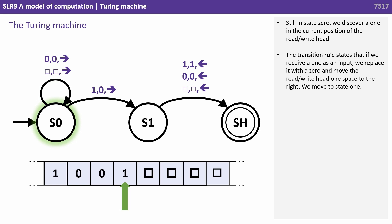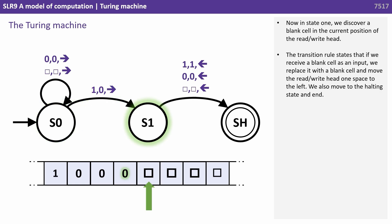The transition rule states that if we receive a 1 as input, we replace it with a 0, and move the read-write head one space to the right. We also move to state 1. The transition rule states that if we receive a 0, we move the read-write head one space to the left. We also move to the halting state and end.